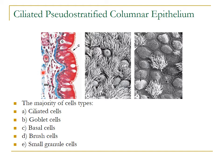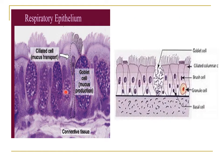Below the epithelium is the lamina propria, which consists of glands and is highly vascular. The seromucous glands are present here. The ciliated tall columnar cells spread mucus — secreted by the goblet cells — over the surface of the epithelium. The cilia of the tall columnar cells beat in a rhythmic fashion, entrapping dust particles and other foreign particles.